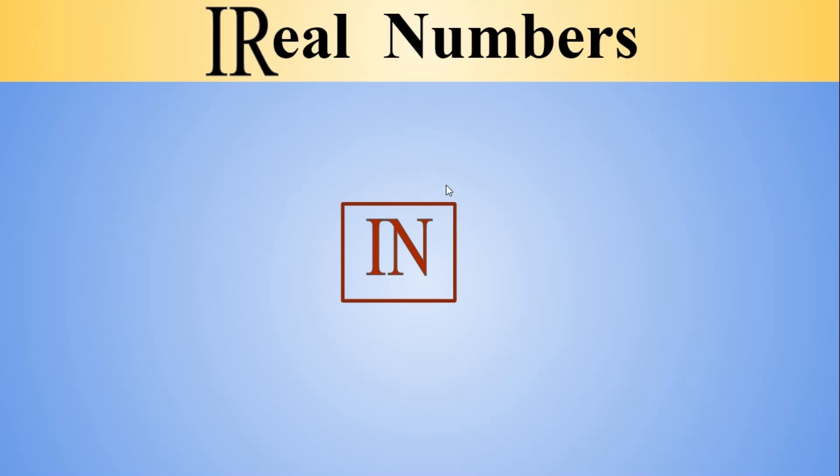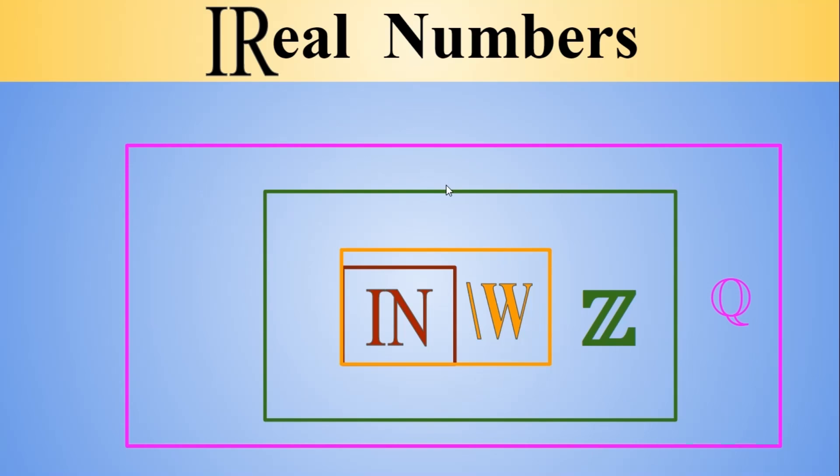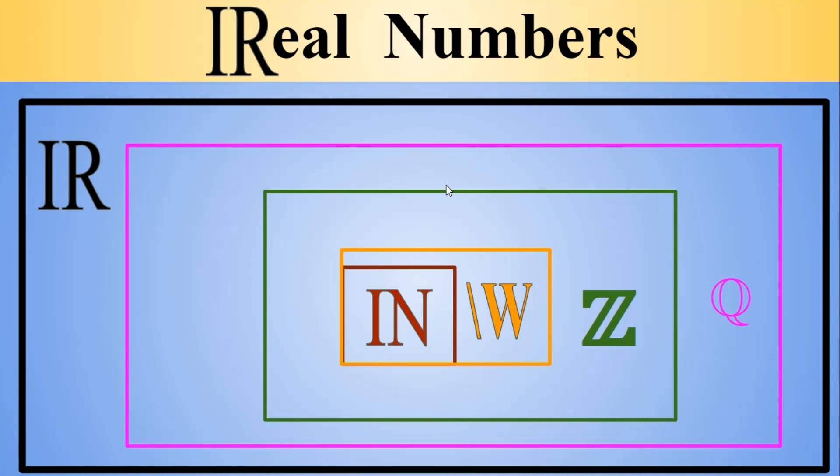We said the very first level, the simplest level are the natural numbers and inside the natural numbers we have to remember that we have started 1, 2, 3 in this way. Then when I add 0 I get this extra layer which are my whole numbers. When I start to add negatives here I get another layer which is my set of integers. Keep going and form fractions or ratios or quotients of integers and you get rational numbers.